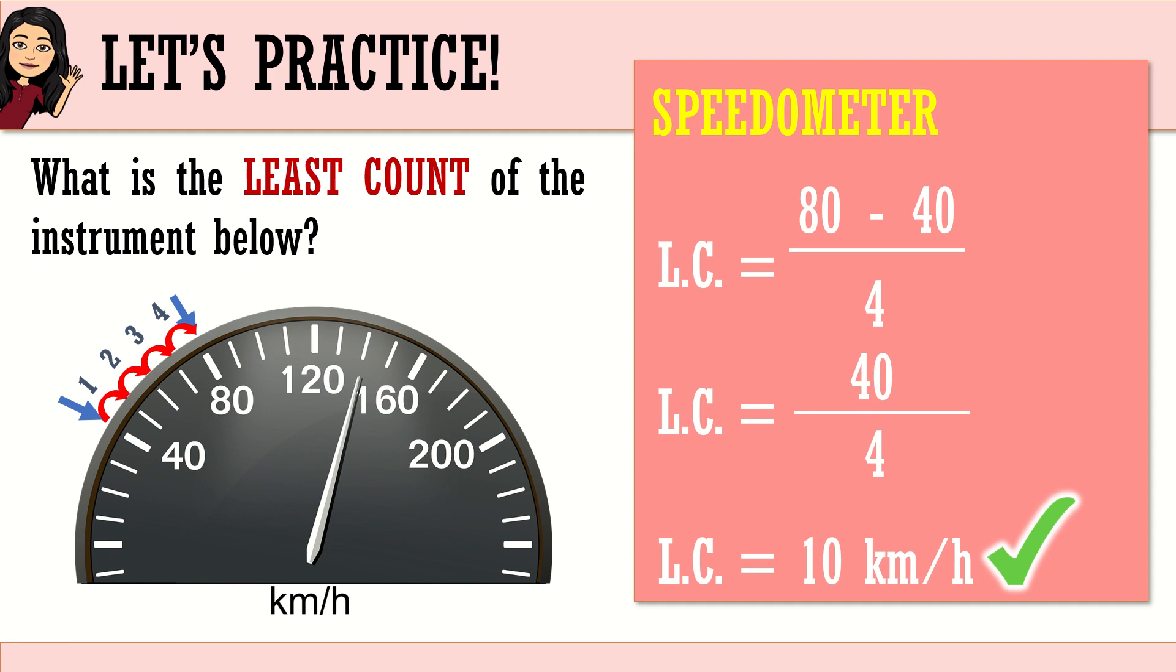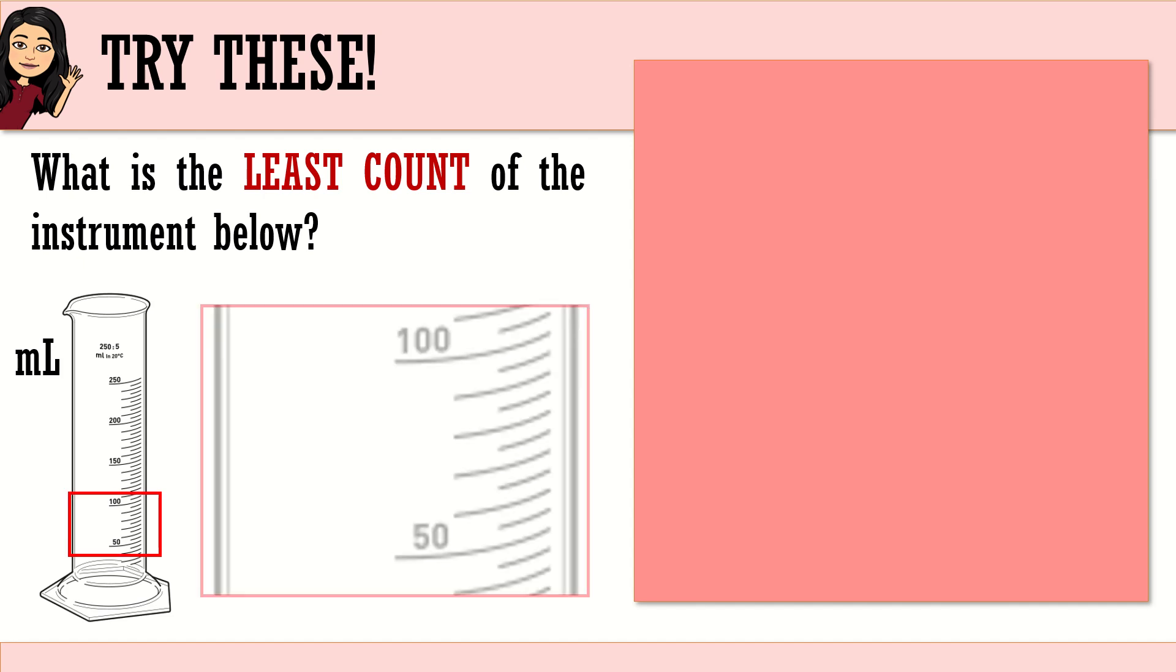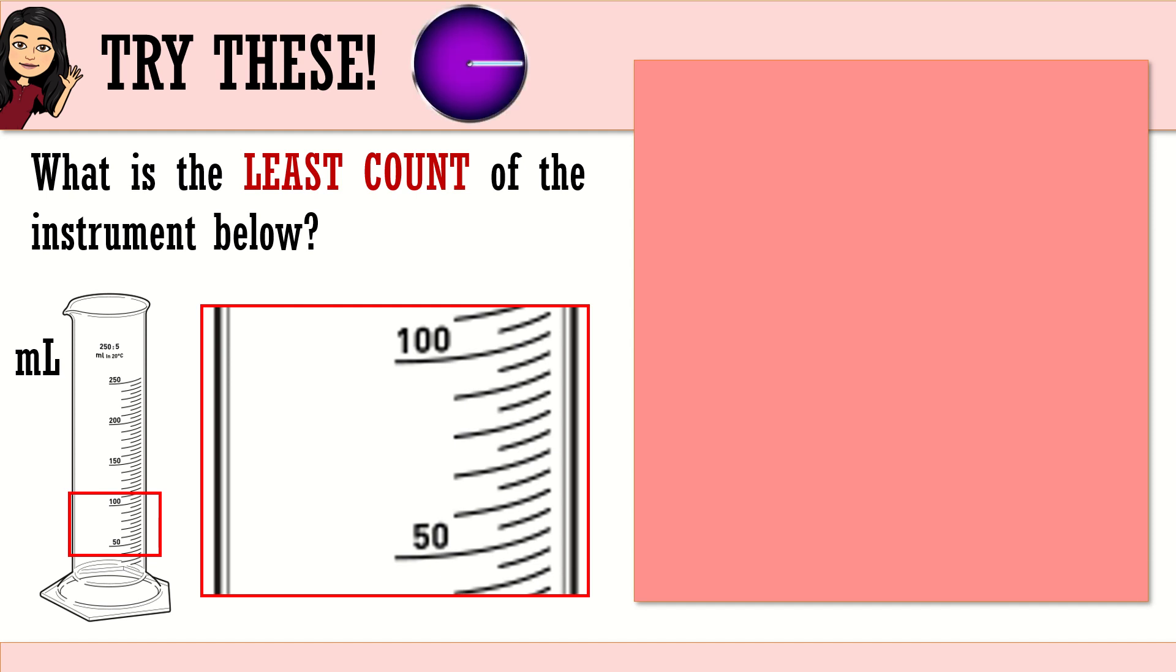Very good. Let's now proceed to our two items for exercises. Let's have exercise number one. Let's try this. I know you can do this. What is the least count of the instrument below? That is the magnified version of that part of your graduated cylinder. I'll give you one minute. Your one minute starts now. Halfway there. Do not forget the steps. First is you identify the two markings. Second, you count the gaps in between. Are you almost done? Okay.